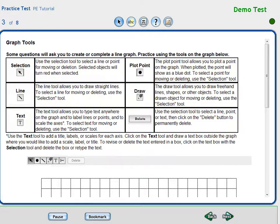There are two text tools that can be used. One will create a text box with a horizontal orientation. The other will allow the user to create a text box with a vertical orientation. The delete tool will allow the user to delete any user constructed item on the graph once it is selected by the selection tool.